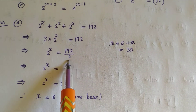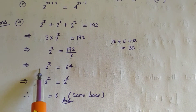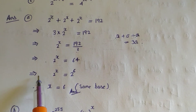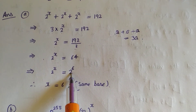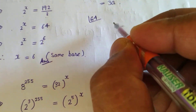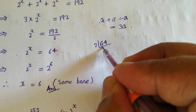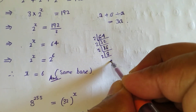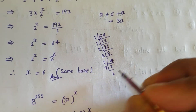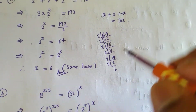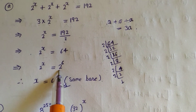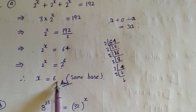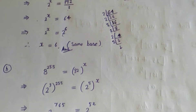That implies 2^x is equal to 64. Now, 64 is 2 to the power 6 — we verify this by prime factorization of 64: 2×2×2×2×2×2 gives six factors of 2, so 64 = 2^6. Since the bases are the same on both sides, the exponents must be equal. Therefore x is equal to 6. This is the required answer.